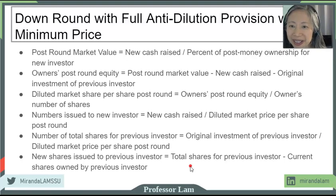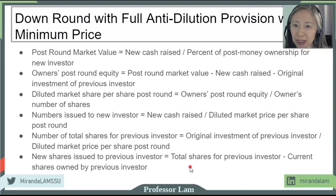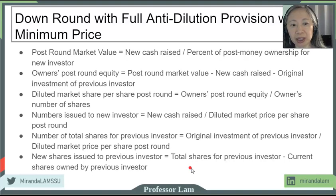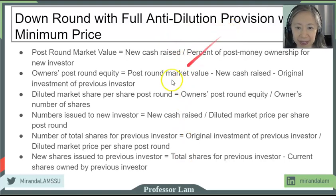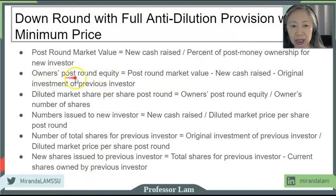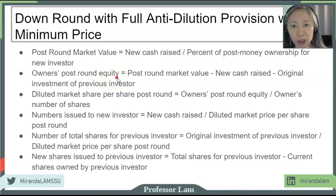I will not read out the formulas here. They are summarized so that it's easy for you to put them into your model when you need to use them. We'll also go through an extensive example to demonstrate how these work. The most important thing for you to understand is that the step and the process for computing the post-money valuation is very different depending on the anti-dilution provision during a down round.